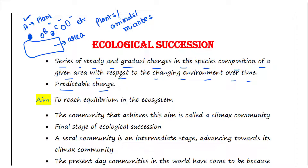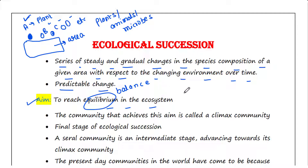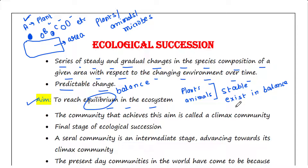This is a predictable change because it is always predicted that plants will occur first before animals, since plants can make food. The aim of ecological succession is to reach equilibrium in the ecosystem — that means balance. When a community reaches equilibrium, the populations of plants and animals remain stable and exist in balance with each other and their environment. The community that achieves this aim is called a climax community.